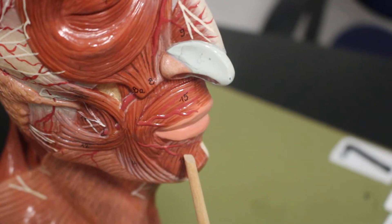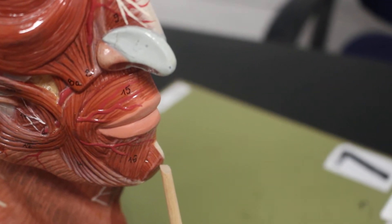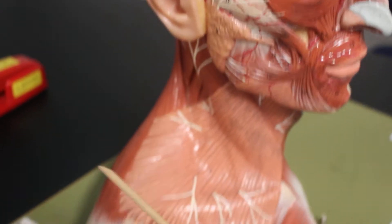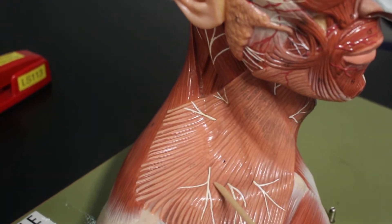And here is depressor labii inferioris. Then right here is mentalis. This big sheet of a muscle here is platissima. So that is all platissima.